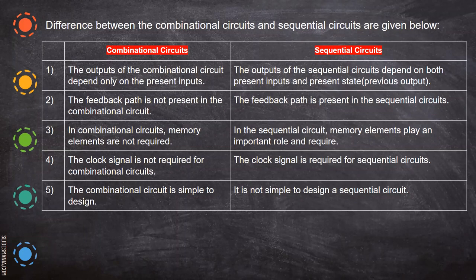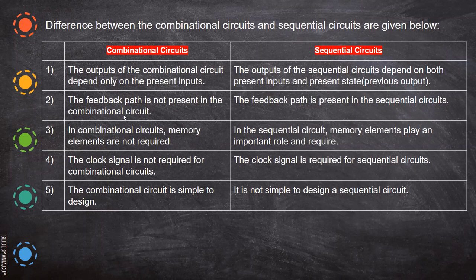The output of the flip-flop is sent and given as an input - that is what we have seen in the flip-flop. Whereas the feedback part is not present in combinational circuits. If we see multiplexer, demultiplexer, encoders, the output is not given again as an input. In combinational circuits, memory is not there, but here memory plays an important role and is required.